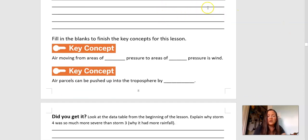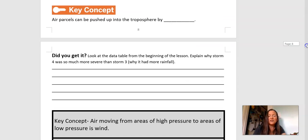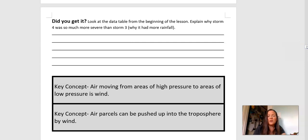And then we're going to come down here and fill in our key concepts. So these are the big ideas from this chapter, this first lesson in this chapter. The air moving from areas of blank pressure to areas of blank pressure is wind. So do you think you can fill in which is high and which is low? And then air parcels can be pushed up into the troposphere by what are we studying in this lesson? That's the word that's going to go in that blank. So now check yourself. Did you get it? Look at the data table from the beginning of the lesson. Why do you think storm four was so much more severe than storm three? Why did it have more rainfall? Can you do that? Can you answer that question? You have a bunch of data now to figure that out.